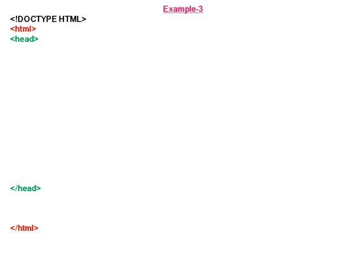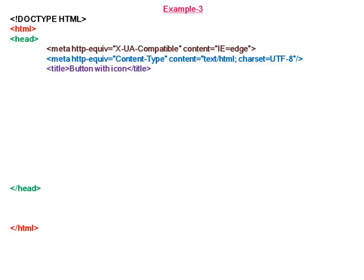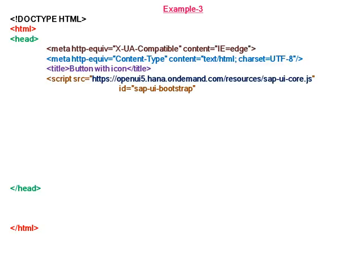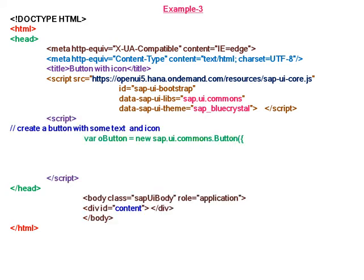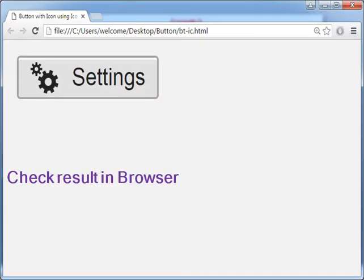In Example 3, we create a button with an icon. The theme is Blue Crystal. We create a new button with text 'Settings', and the icon is an SAP icon. We attach this button to the div element. Check the result in the browser to see the button with text 'Settings' and the icon.